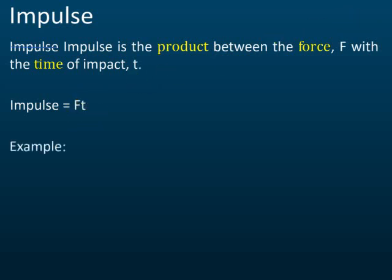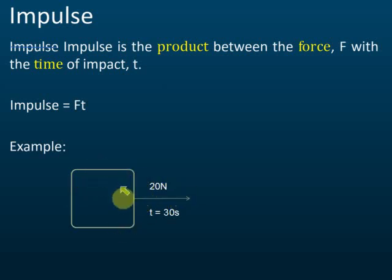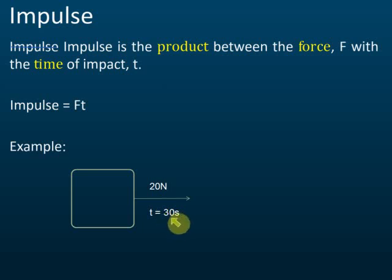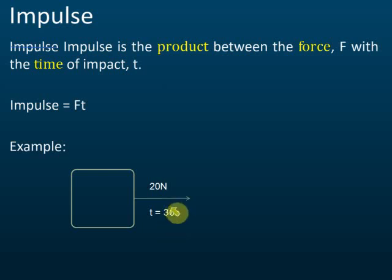For example, if we have an object with a 20 newton force pulling on it, and how long does this force pull on this object? It pulls it for 30 seconds. So a 20 newton force is applied on this object for 30 seconds.